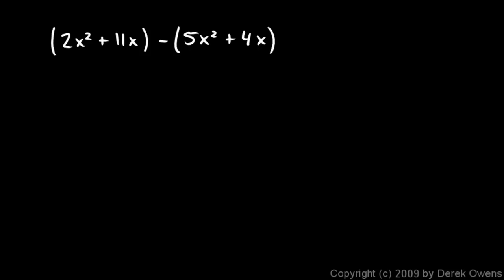Here's one more example involving subtraction. So let's rewrite it without the parentheses. And remember this negative sign will change the sign on both of those. So I have 2x² + 11x - 5x² - 4x. And when I combine terms, 2x² and -5x² give me a -3x². And then my +11x and my -4x give me a +7x.